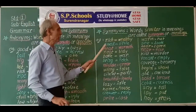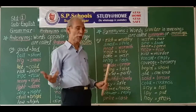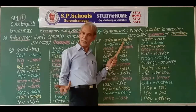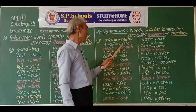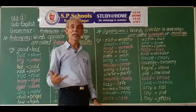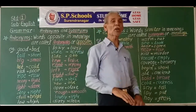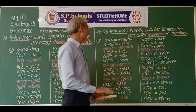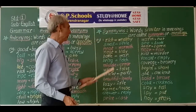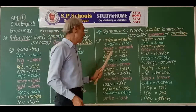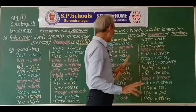For example, rich means a person having money and property — wealthy means the same thing. Small and little mean the same thing. Neat means clean and tidy — tidy also means neat.